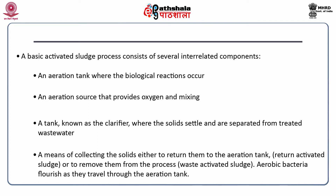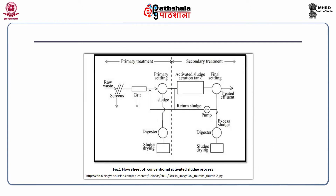Aerobic bacteria flourish as they travel through the aeration tank. This flow chart diagram shows the primary treatment and secondary treatment of wastewater. In primary treatment, first the raw waste is passed through screens, then it is allowed to stand for a few minutes in the grit chamber so the grit is separated. Then it is allowed to settle in the primary settling chamber where sludge is separated, and physicochemical properties are maintained because secondary treatment requires certain pH, etc.